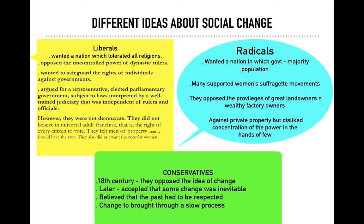The radicals were a group of people who believed that the government of a nation should be formed by those who live in the majority. They supported the women's suffrage movement — meaning women should also have voting rights. They opposed the privileges of great landowners and wealthy factory owners, and they were against private property and disliked the concentration of power in the hands of a few.